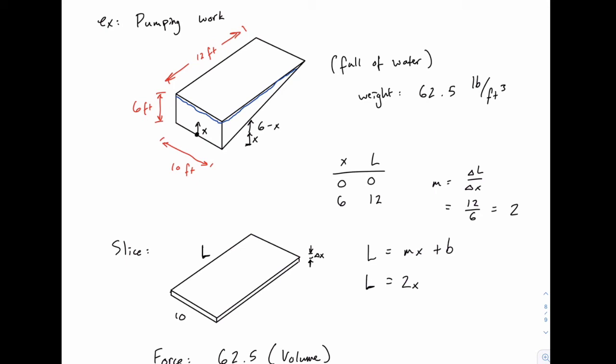So that when you add those together, you get a total of 6. So the remaining distance from x to the top is the total distance minus how far we've gone already. So 6 minus x.